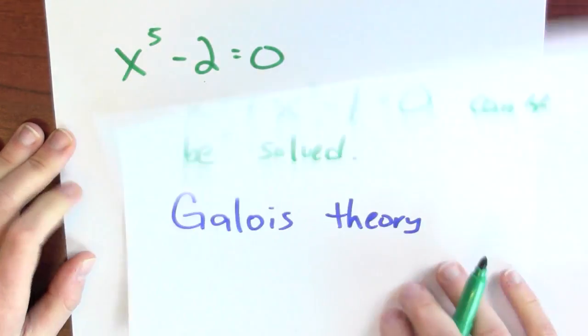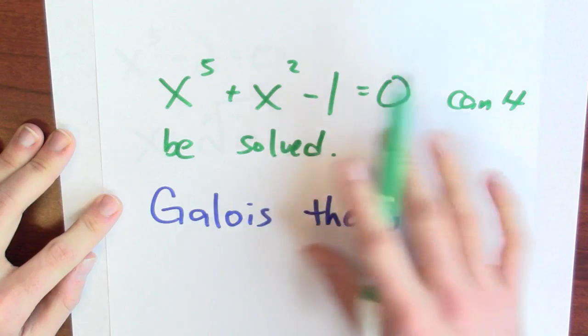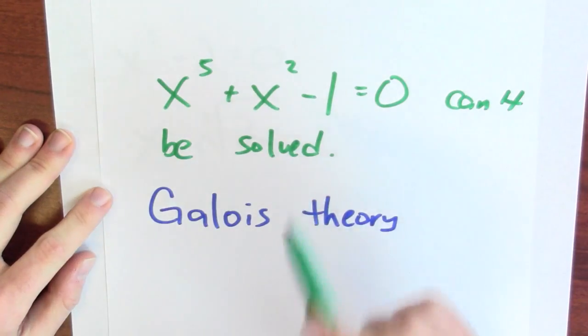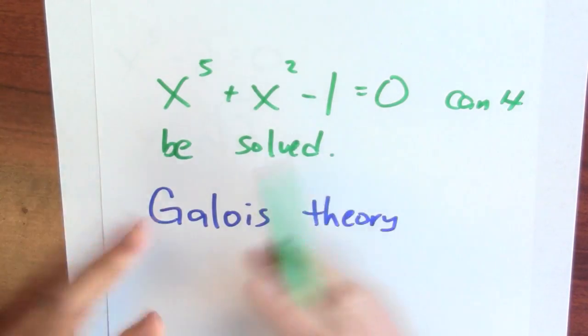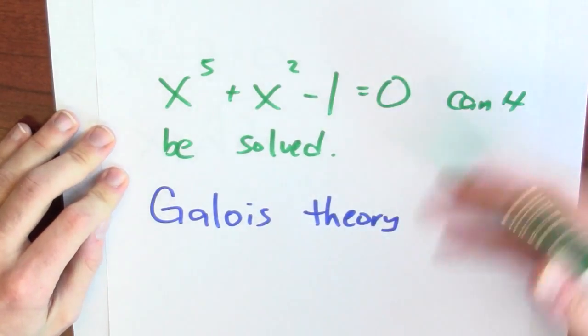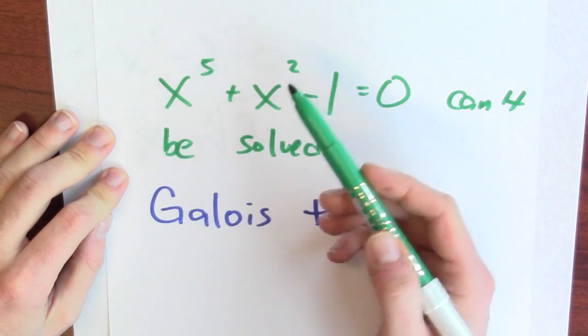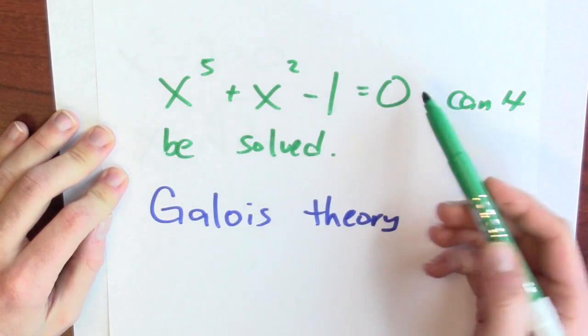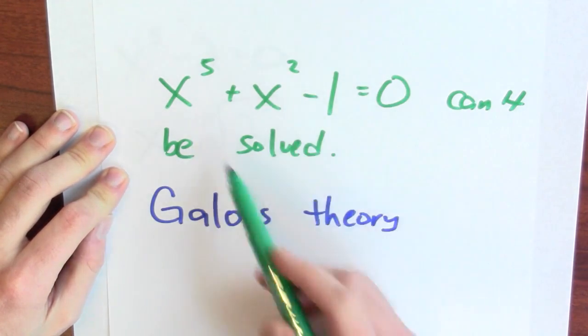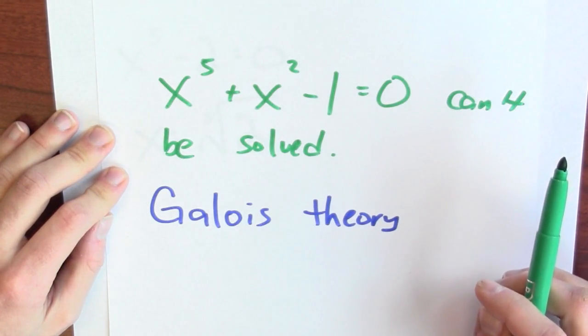But, in contrast, this particular example, x to the fifth plus x squared minus 1, can't be solved in the sense that I can't write down, using fractions, plus, minus, times, divides, and the taking of roots, a number which, if I take its fifth power, add it to its square and subtract 1, I get back 0. I mean, that's the sense in which I can't solve it. I can't just write that thing down in terms of the operations that I have at hand.